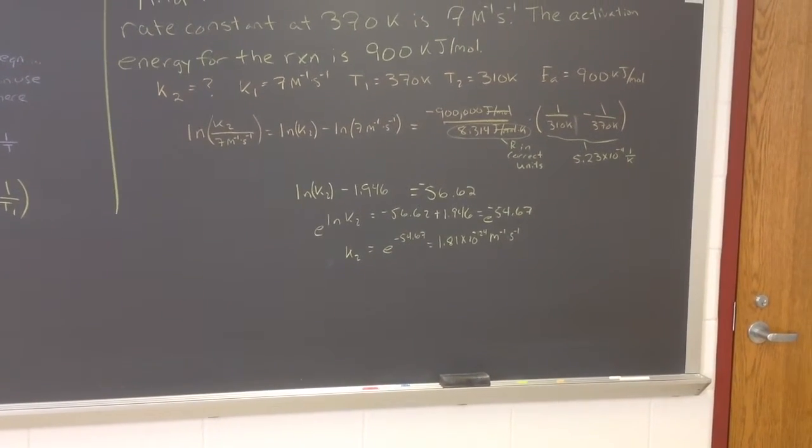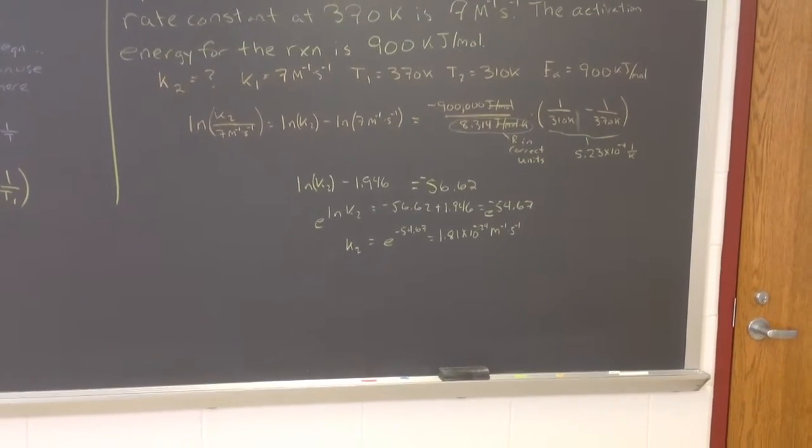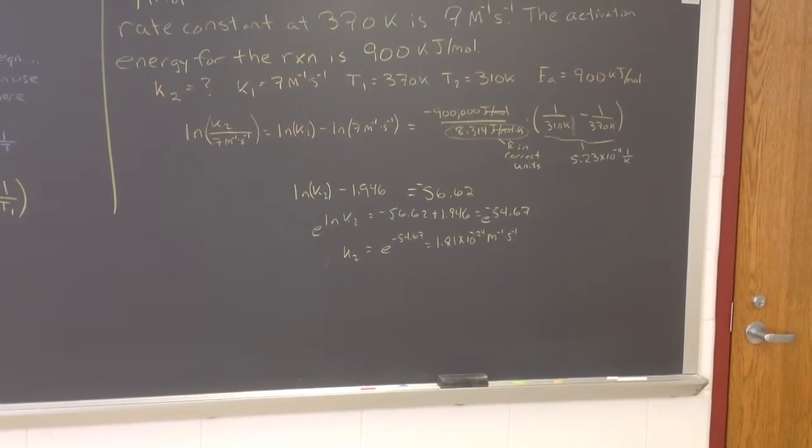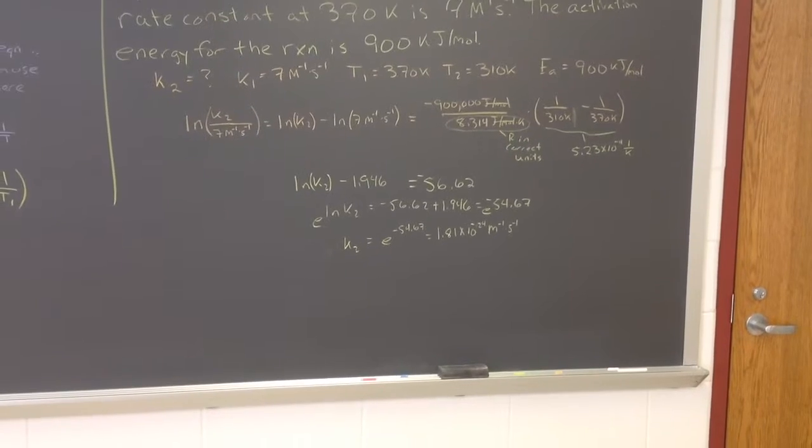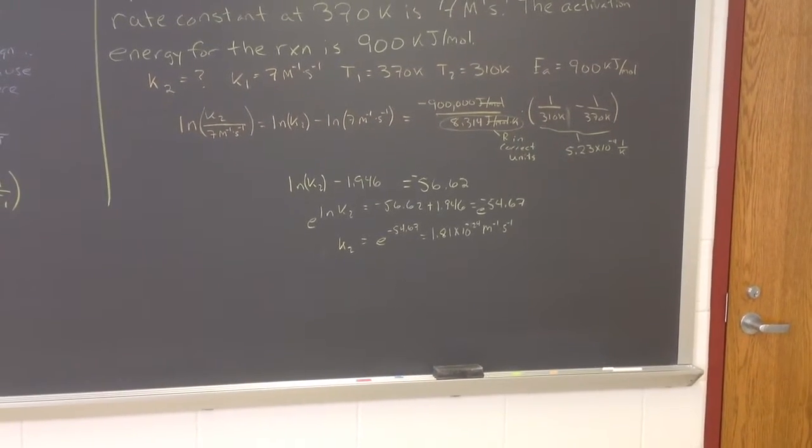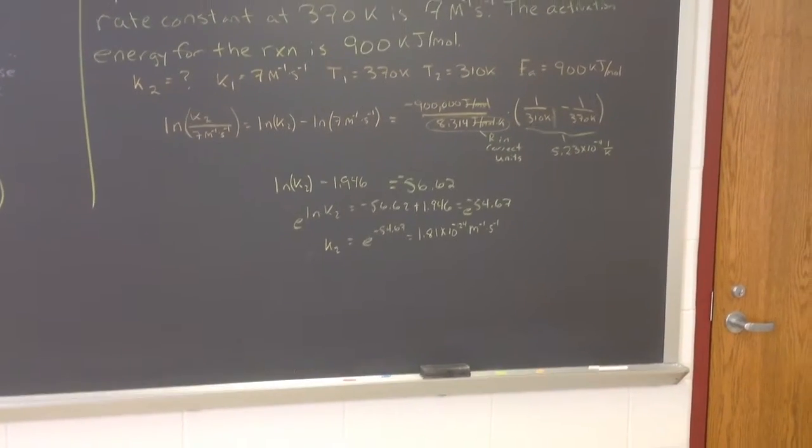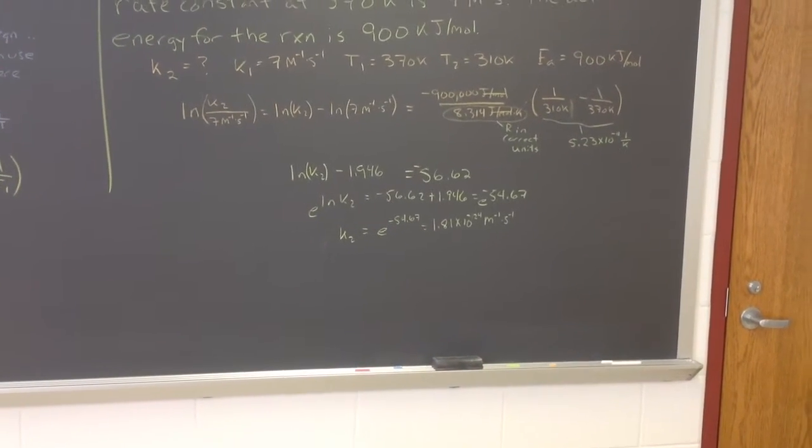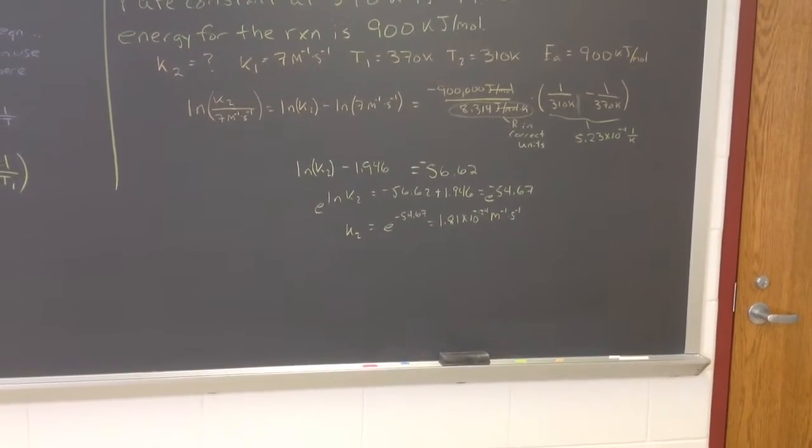We can add those terms and we get negative 54.67. To pull out a natural log, we'll take the exponential of it. So we get k2 equals then, by taking the exponential on both sides, k equals exponential of negative 54.67, which works out to be about 1.8 times 10 to the minus 24 per molar per second.